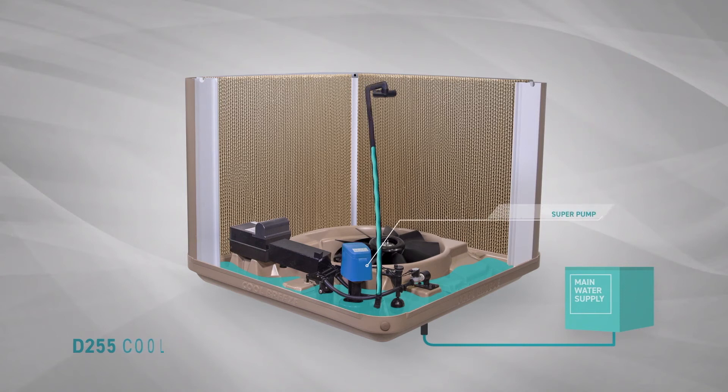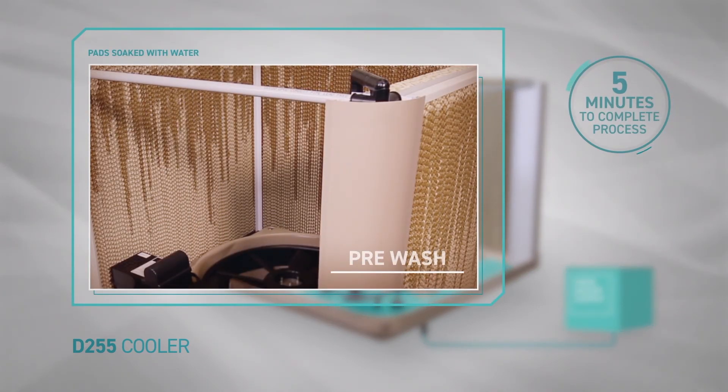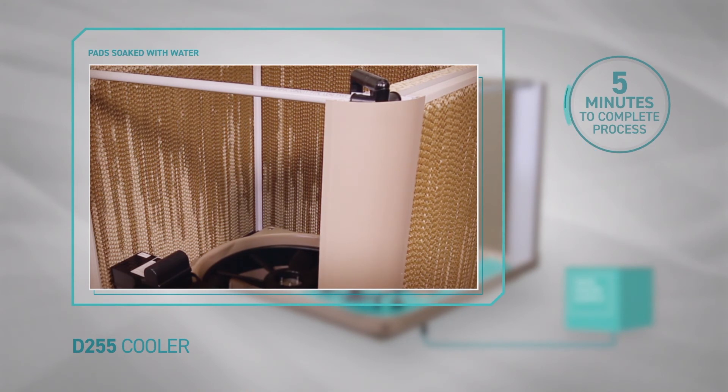When the pump turns on, water is pumped up the riser pipe into the water spreader pipes and onto the pads, thoroughly soaking them. This process, which runs for a total of five minutes, is known as a pre-wash. It is designed to wash any residual dust or minerals that have dried onto the pads during the off period.